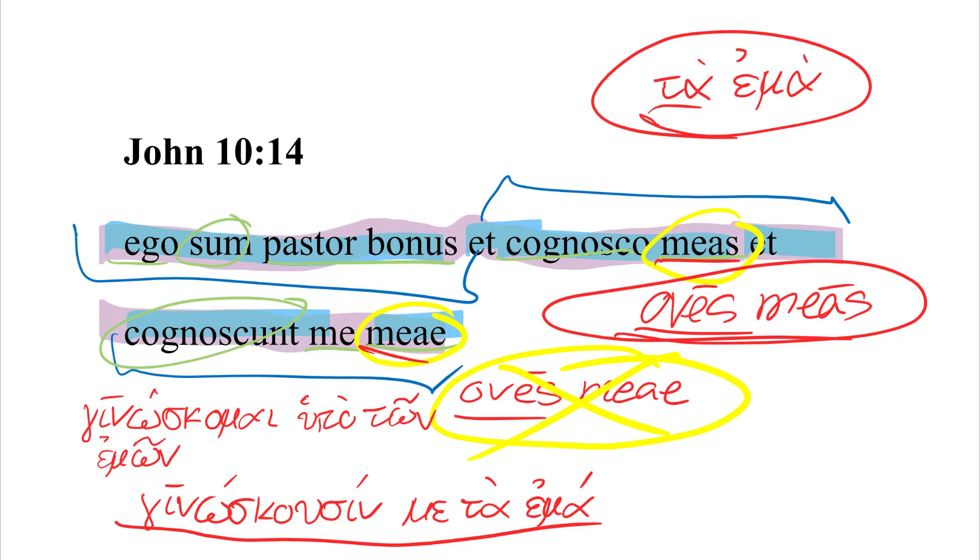Now, textual history is very messy. It is not as simple as the text that Erasmus has was better, or the text that Jerome had was better, as a representation of the Greek text. But in this case, it does seem that Jerome had the better reading.